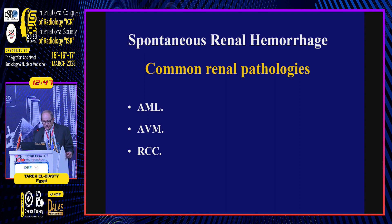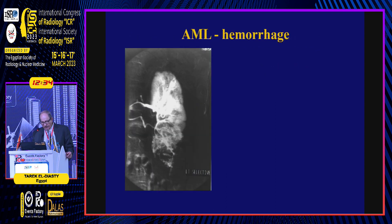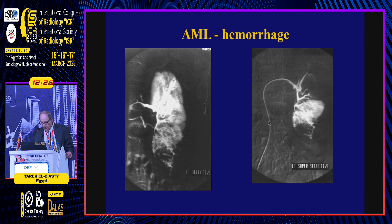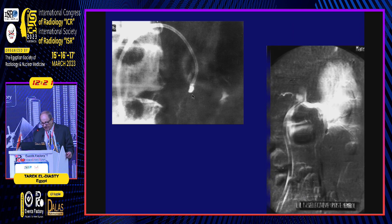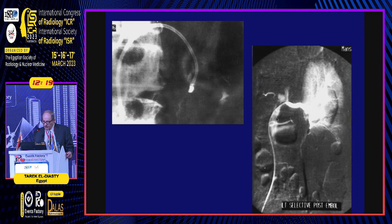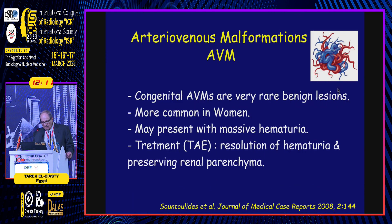Spontaneous renal hemorrhage is usually due to bleeding from angiomyolipoma, arteriovenous malformation, and in some cases hypervascular renal cell carcinoma. This case of angiomyolipoma was complicated with retroperitoneal hemorrhage. On angiography, we reached the feeding artery, delivered the coil, and the post-embolization angiography showed no opacification of the angiomyolipoma with preservation of the whole renal vasculature.